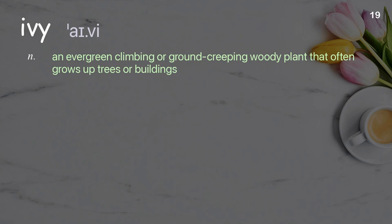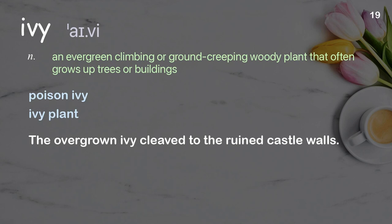Ivy: An evergreen climbing or ground-creeping woody plant that often grows up trees or buildings. Examples: Poison ivy. Ivy plant. The overgrown ivy cleaved to the ruined castle walls.